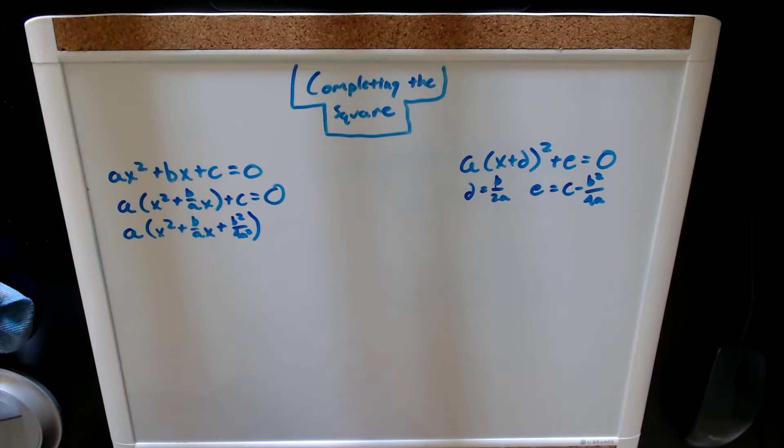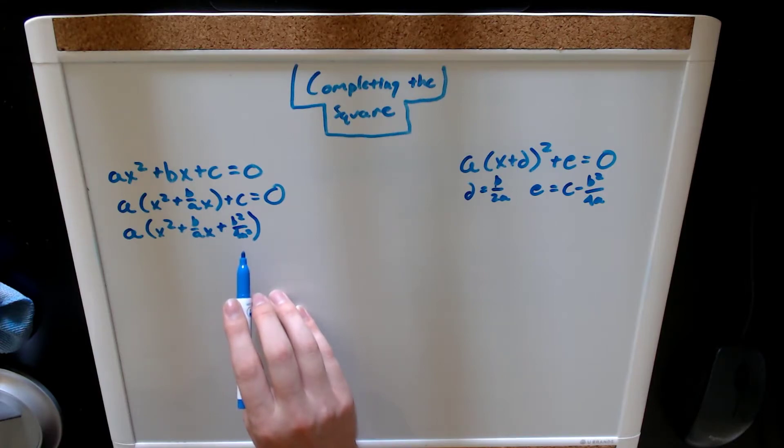However, we can't stop there. We added a b squared over 4a squared, so we have changed the value of this side of the equation. So, we need to subtract it back out.